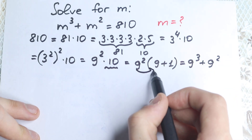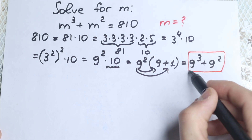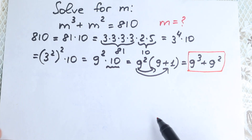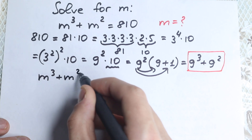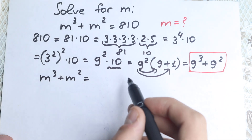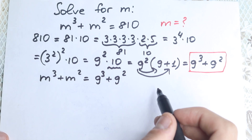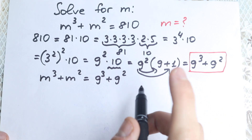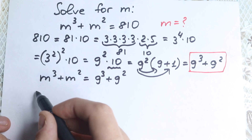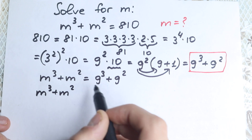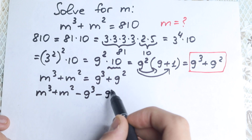This is a really important expression. Let's use it in our solution. We have m cubed plus m squared, and instead of 810 on the right-hand side, we write it as 9 cubed plus 9 squared. We can already see one obvious solution, but I want to solve it completely. So let's bring everything to the left-hand side: m cubed plus m squared minus 9 cubed minus 9 squared equals zero.